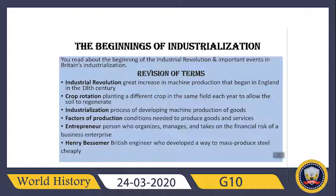Factors of production — the conditions which are needed to produce goods and services. Entrepreneur — a person who organizes, manages, and takes on the financial risk of a business enterprise. And at the end we have Henry Bessemer — he was a British engineer who developed a way to mass-produce steel cheaply.